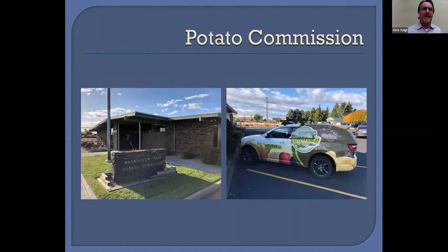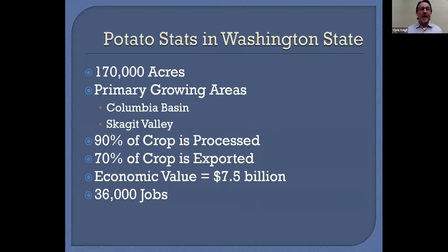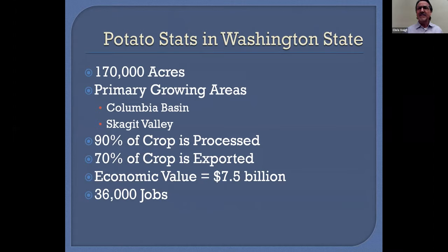Our office is located in the heart of the potato growing region in Washington State — the Columbia Basin is the biggest part. If you've ever driven I-90 towards Spokane or Montana, as soon as you cross the Columbia River there's a sign that says 'Welcome to Grant County, the largest potato producing county in the country.' That's us — our office is in Moses Lake, Grant County. We grow roughly anywhere between 165 and 170,000 acres of potatoes, primarily in the Columbia Basin from Moses Lake down to the Tri-Cities area, which is about 90% of all potatoes in Washington State.